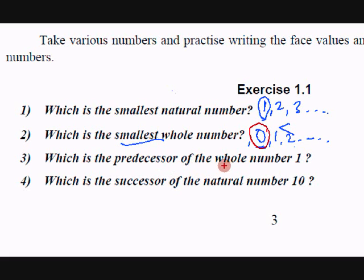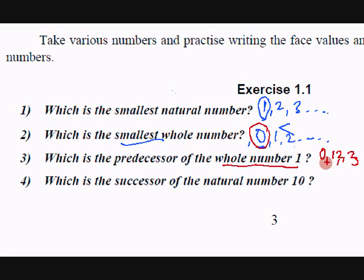Predecessor of the whole number 1. Whole numbers are 0, 1, 2, 3, etc. Predecessor means the previous one. Who is previous to 1? Yes, 0 is previous. What is next to 1? 2 is next to 1 — that is the successor.